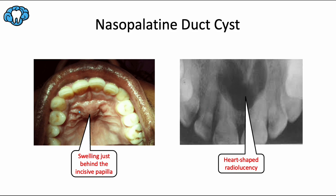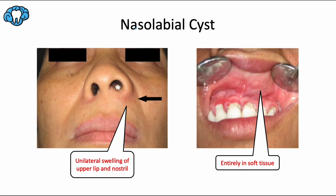Recommended treatment for the nasopalatine duct cyst is surgical removal before it causes major damage through continued growth, bone pressure, and possibly tooth loss. The nasolabial or naso-alveolar cyst is a fissural cyst located within the soft tissue of the upper lip, and it's usually unilateral, only affecting one side of the face. It causes swelling of the upper lip and the ala of the nose on one side. Since it's entirely within soft tissue, you cannot see this on an x-ray. It's caused by entrapment of epithelial remnants from the nasolacrimal duct, and recommended treatment is surgical removal.